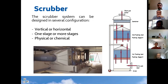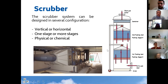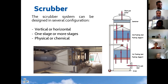The concept looks simple, but there are many configurations: vertical, horizontal — if you have space constraints — one stage or more stages, where a stage is a location where water is sprayed onto the bed. This is an example of a two-stage scrubber. Scrubbing can be physical or chemical — let me explain: if you inject a reagent into the water you change from physical to chemical scrubbing.